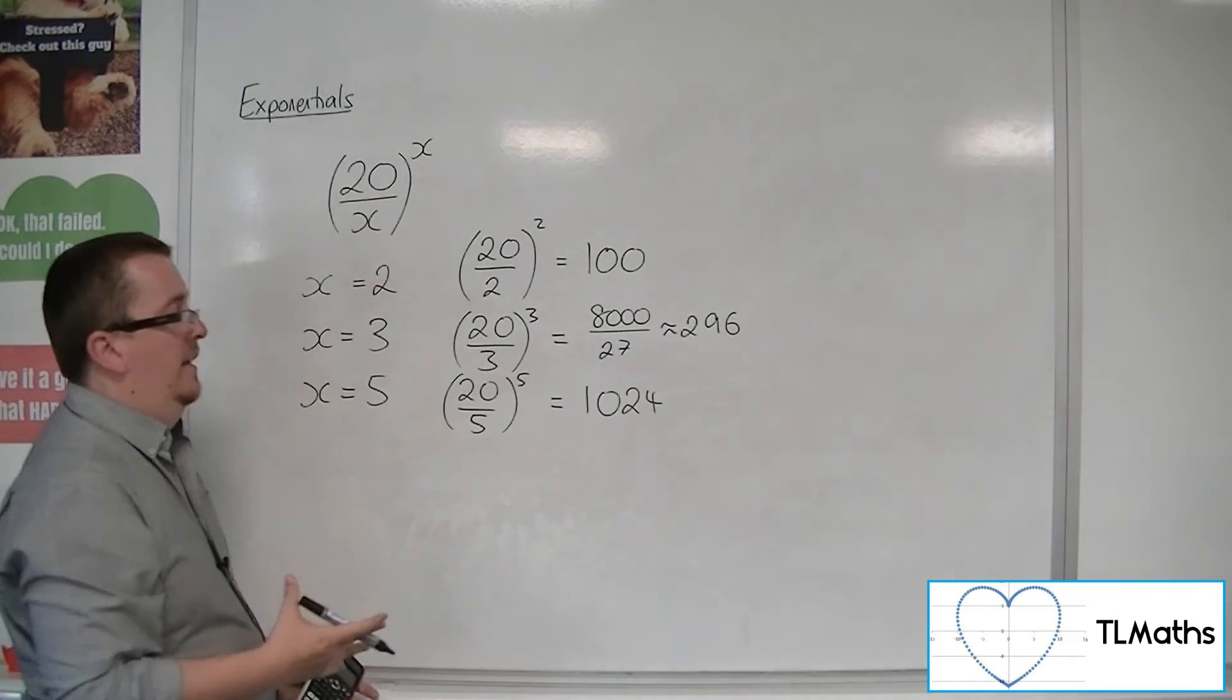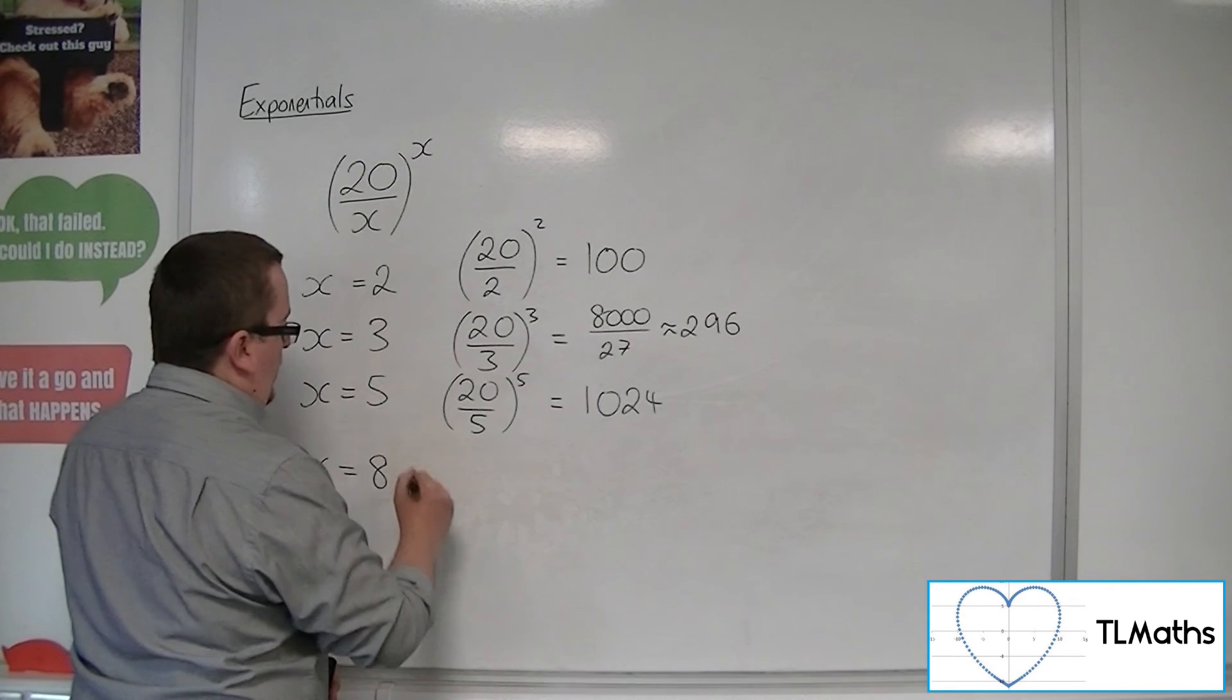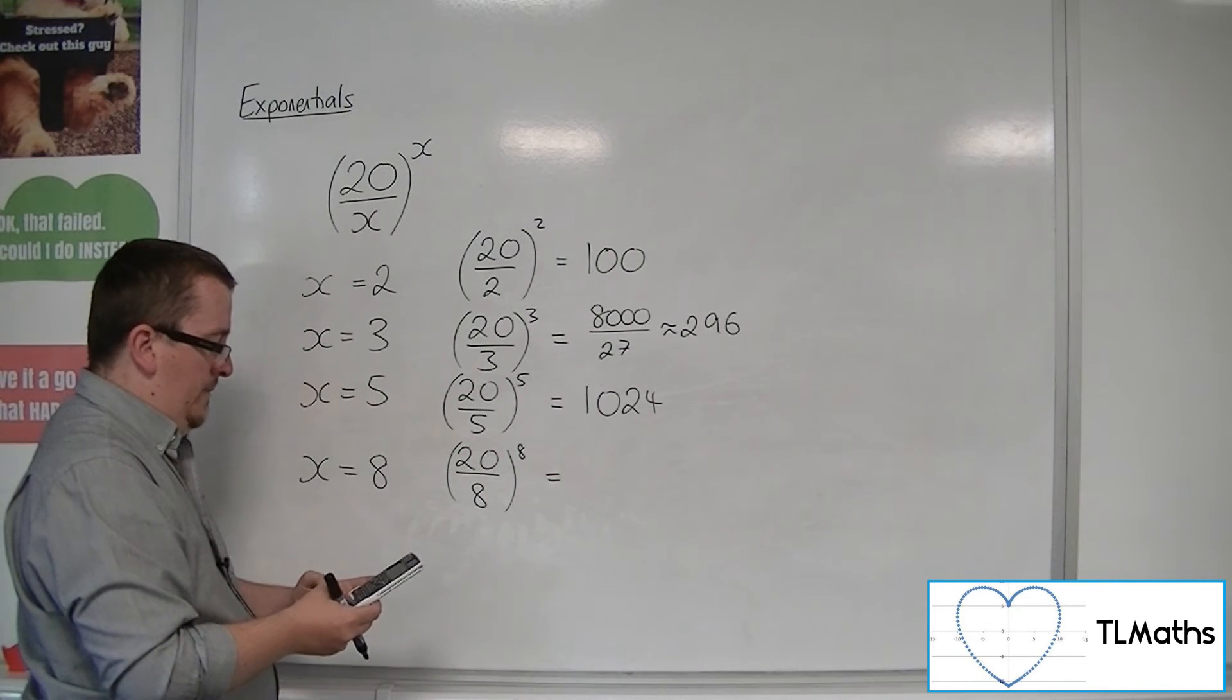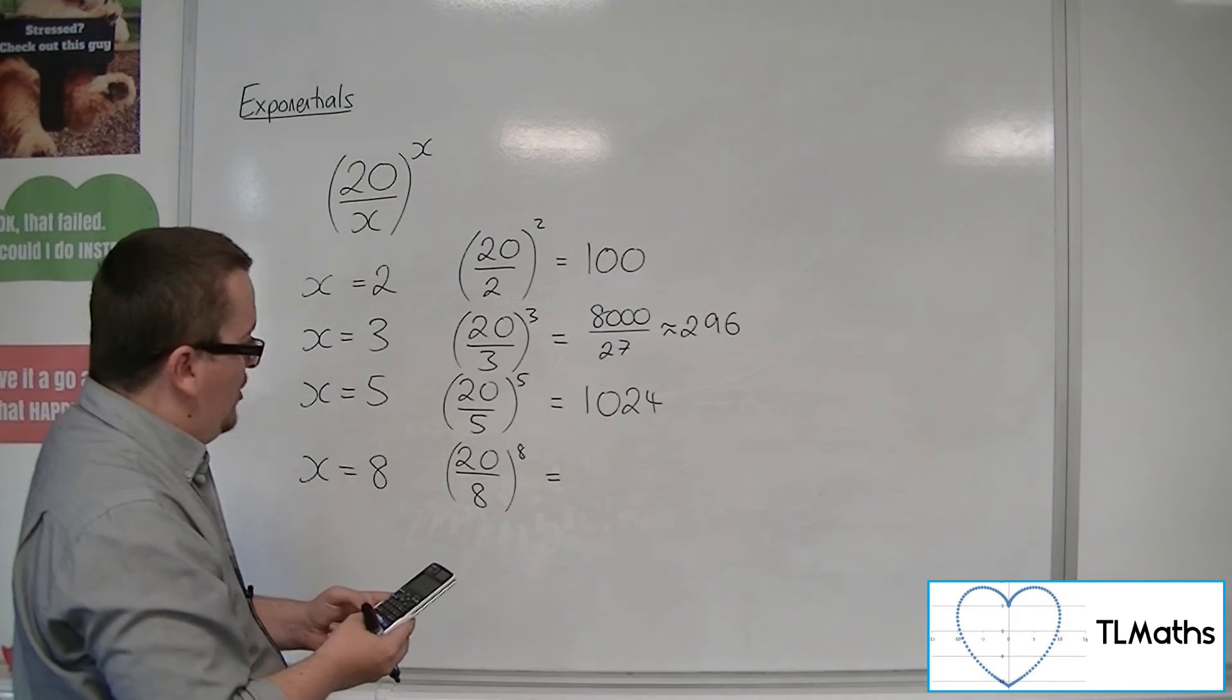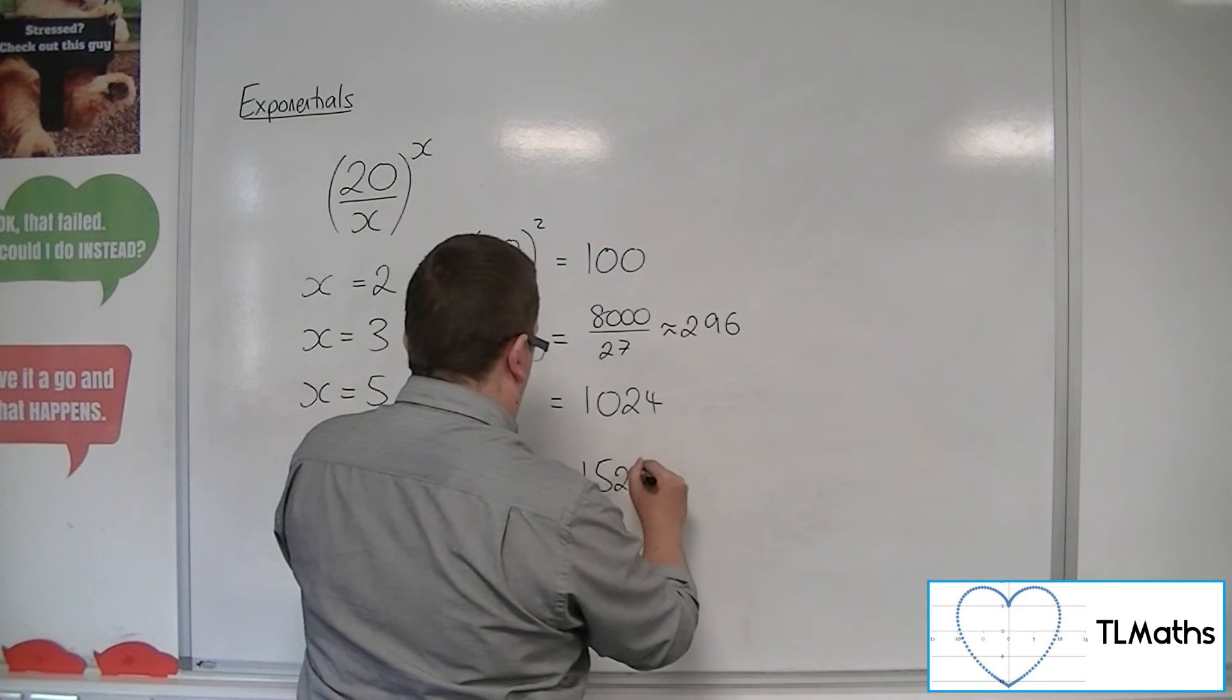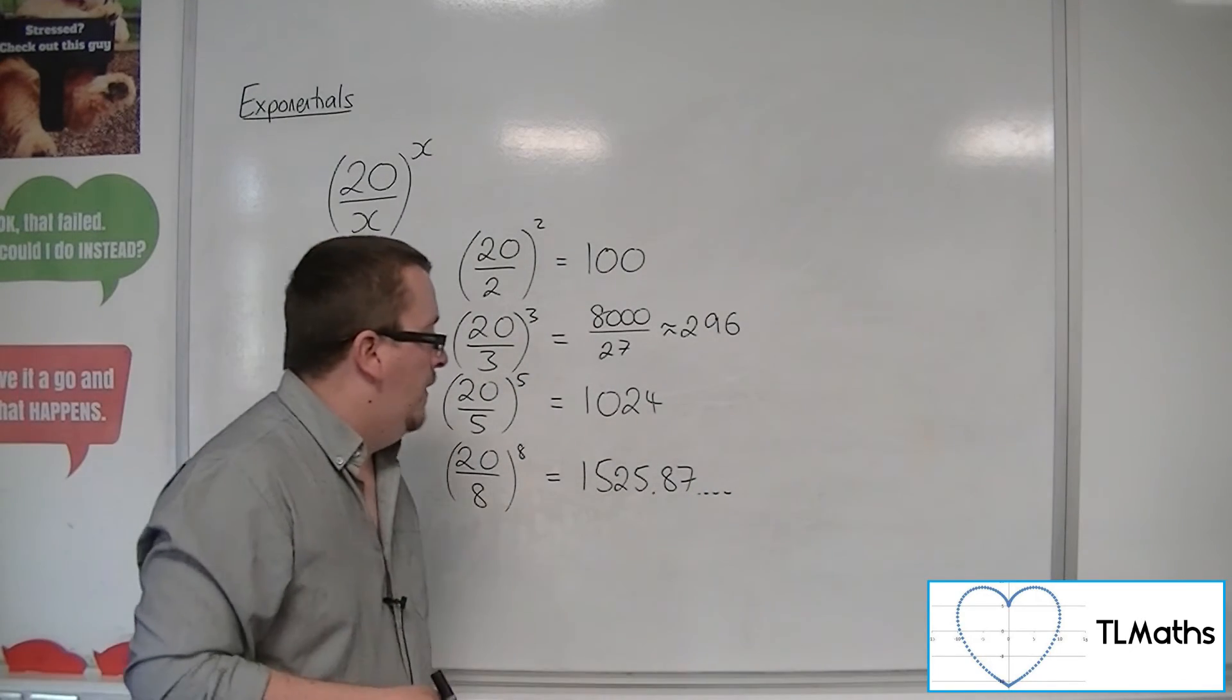So clearly we're getting larger, right? So we might think, well, what about when x is 8? So 20 over 8 to the 8. Now you might be thinking, well actually, now that I can see what's going on, that number inside the bracket is actually getting smaller and smaller. And this gets us to 1525.878906, approximately 1526.